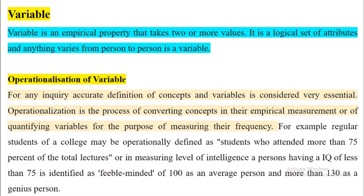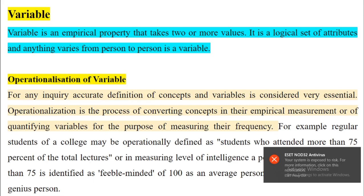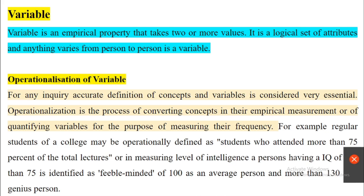What is a variable? A variable is an empirical property that takes two or more values. For example, if gender is a variable, its values will be male, female, transgender, or other options. Anything that varies from person to person — a logical set of attributes — is a variable.